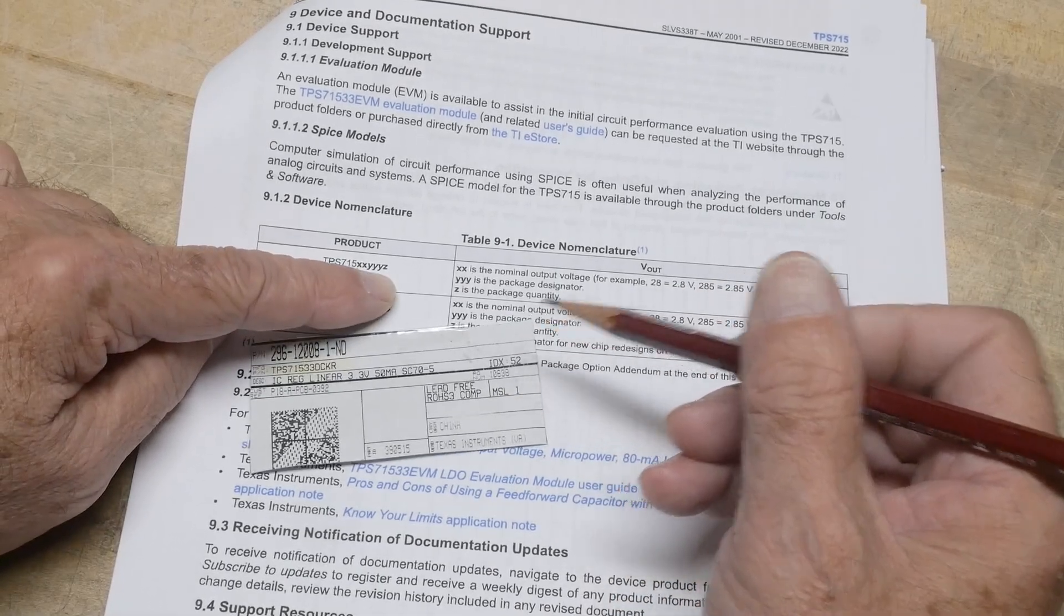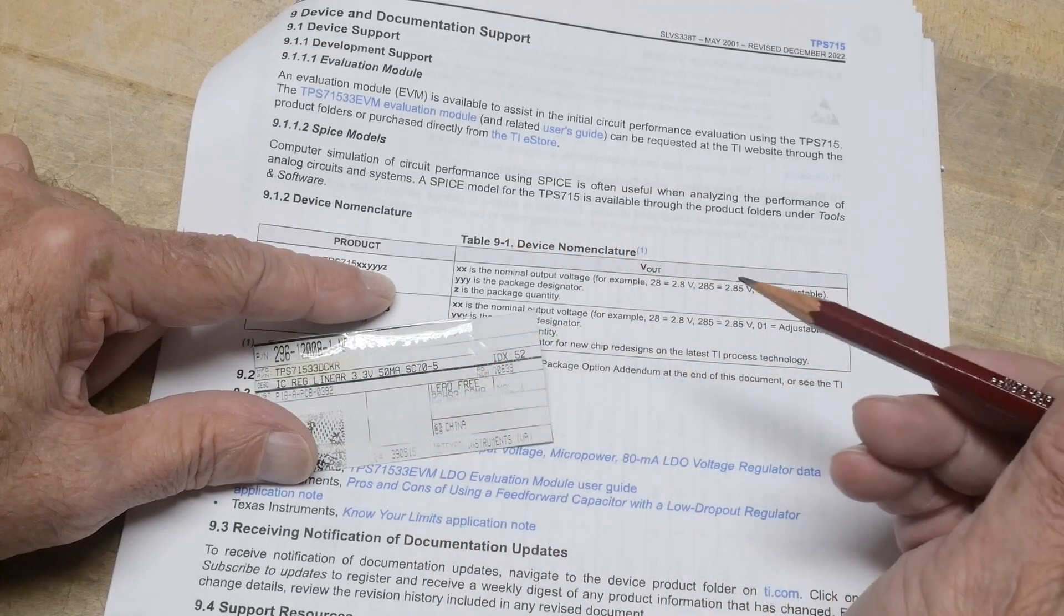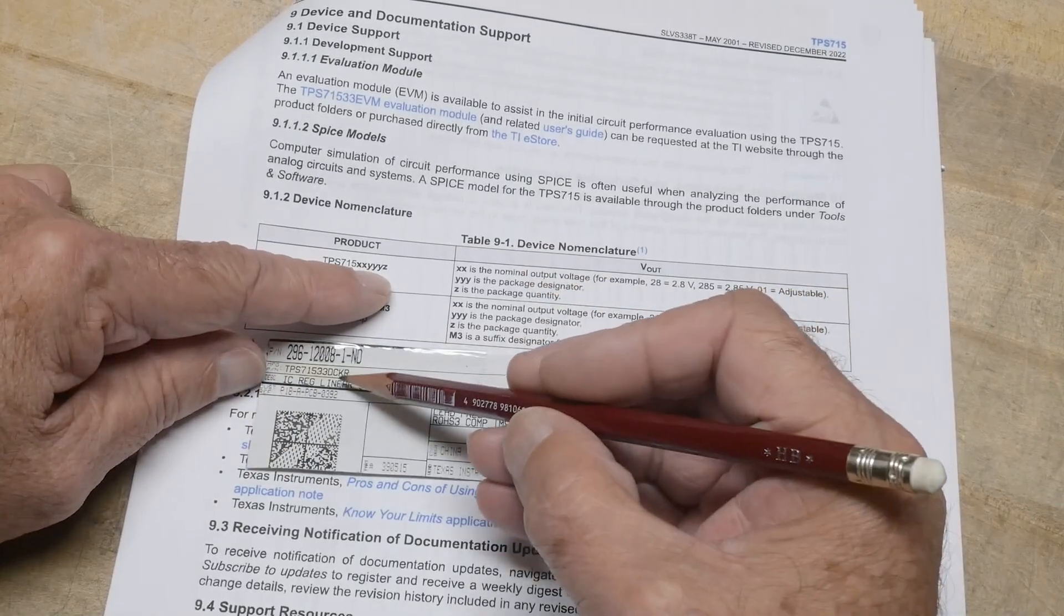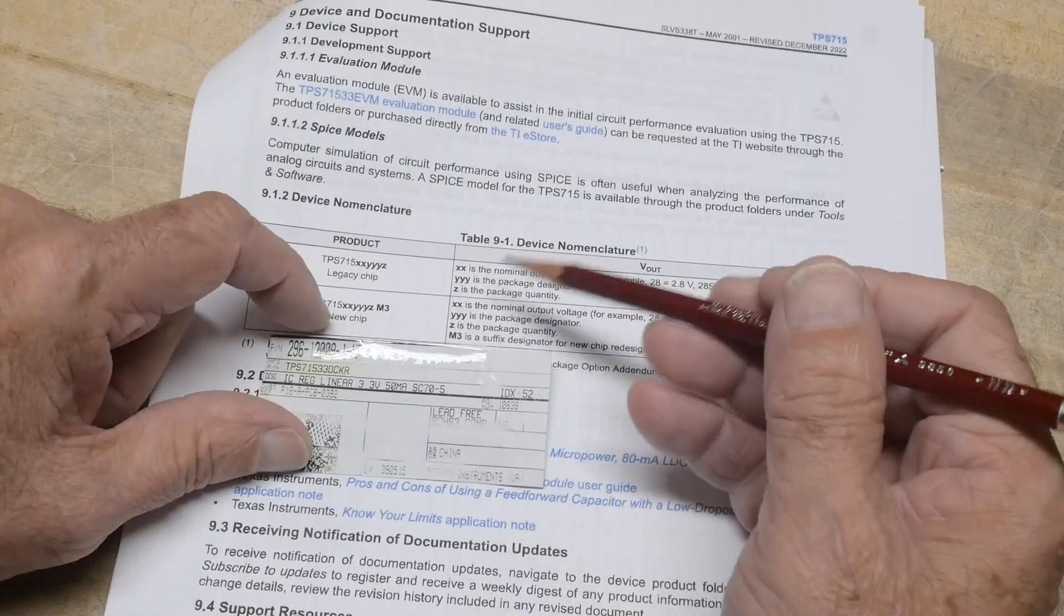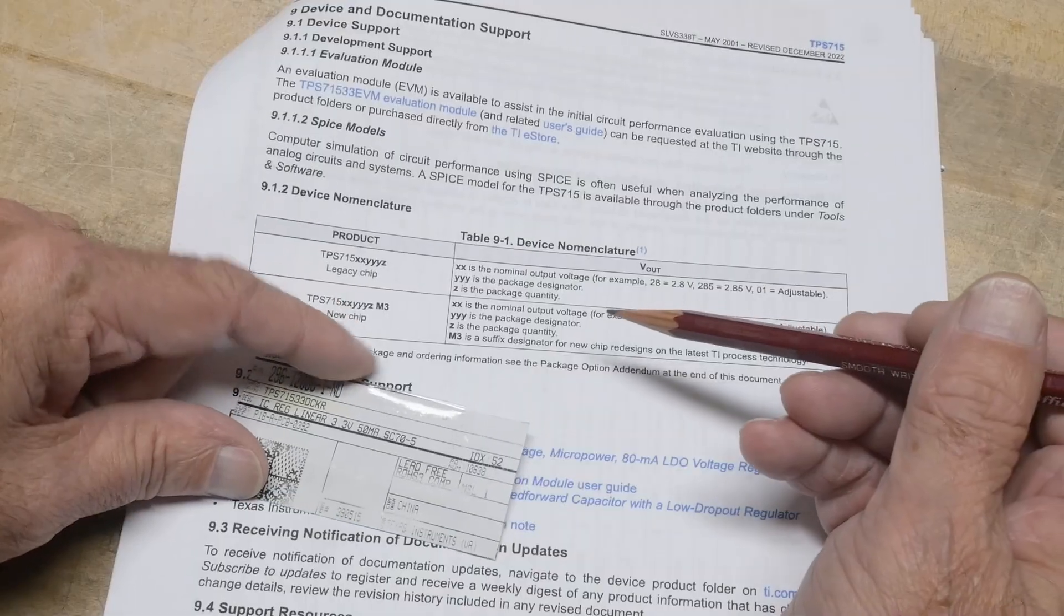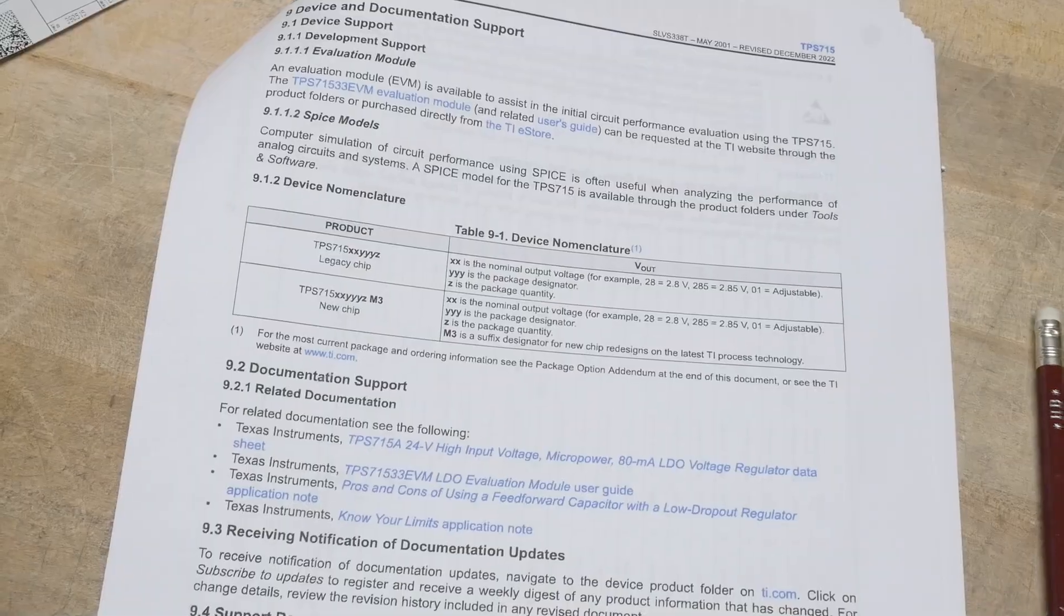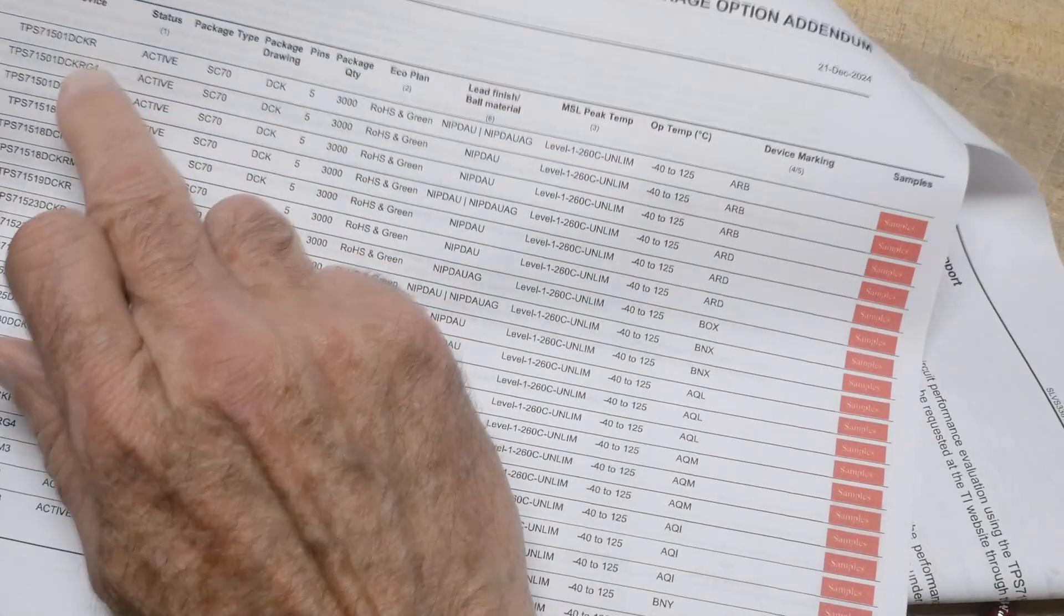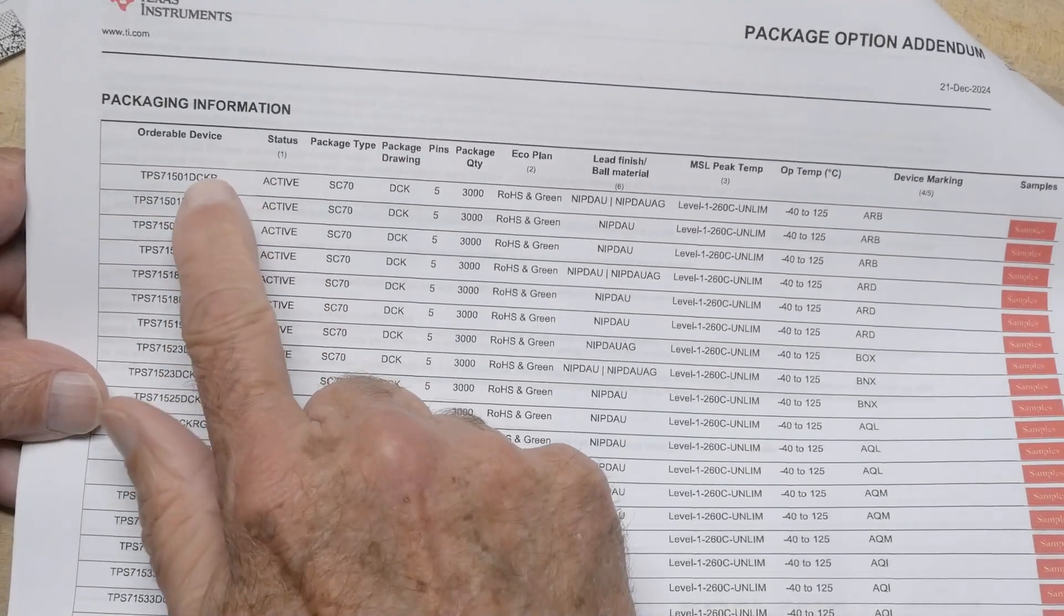And then the yy is the dc. Oh, yyy. That's the dck package designator. And then the z. The last thing is an r which is package quality. We have an r package quality. I wonder what that is. What is r package quality? Oh, okay. Well, here's packaging. Here's the r. It's good from minus 40 to 125.